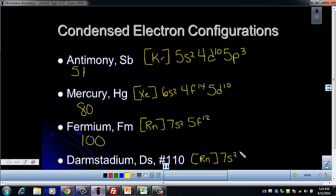Don't forget to subtract 2 as you go to the f, so 5f. F is full, so it has 14. Then darmstadium is in the d block, so it's 6d—d is one less than the row it's in—6d8.